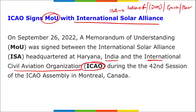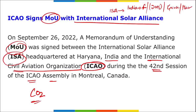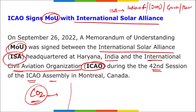ICAO and the International Solar Alliance signed a Memorandum of Understanding during the 42nd session of the ICAO Assembly in Montreal, Canada. The purpose is to check the growth of CO2 emissions in the aviation sector and to reduce carbon emissions by planning and developing technologies and frameworks.